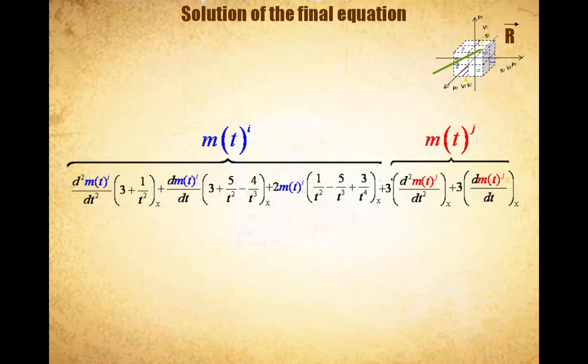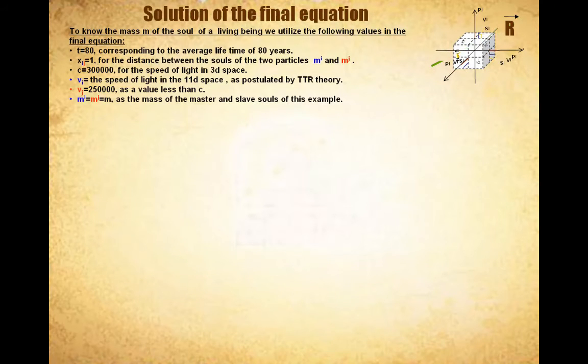Instead of having the time to decay unknown, as we had in the previous example to find the lifetime of an EPI section soul such as a quark, now we have M as unknown. In this way we can find the value of the mass M of an EPI section soul corresponding to the soul of a living being. As a result, we will know how much is the weight of the soul. To know the mass M of the soul of a living being we utilize the following values in the final equation.